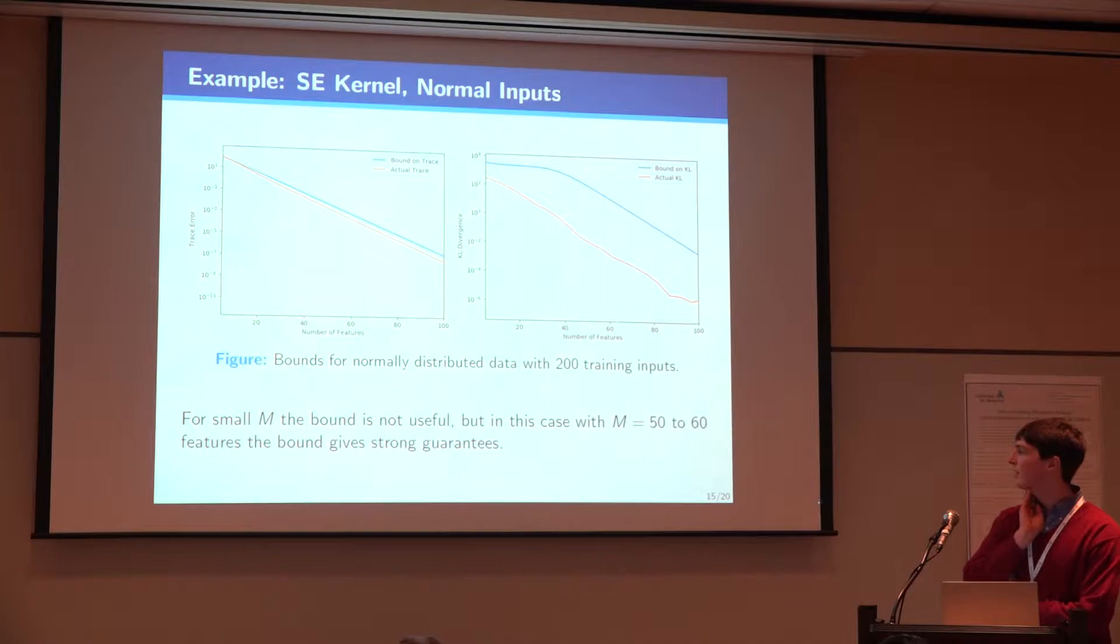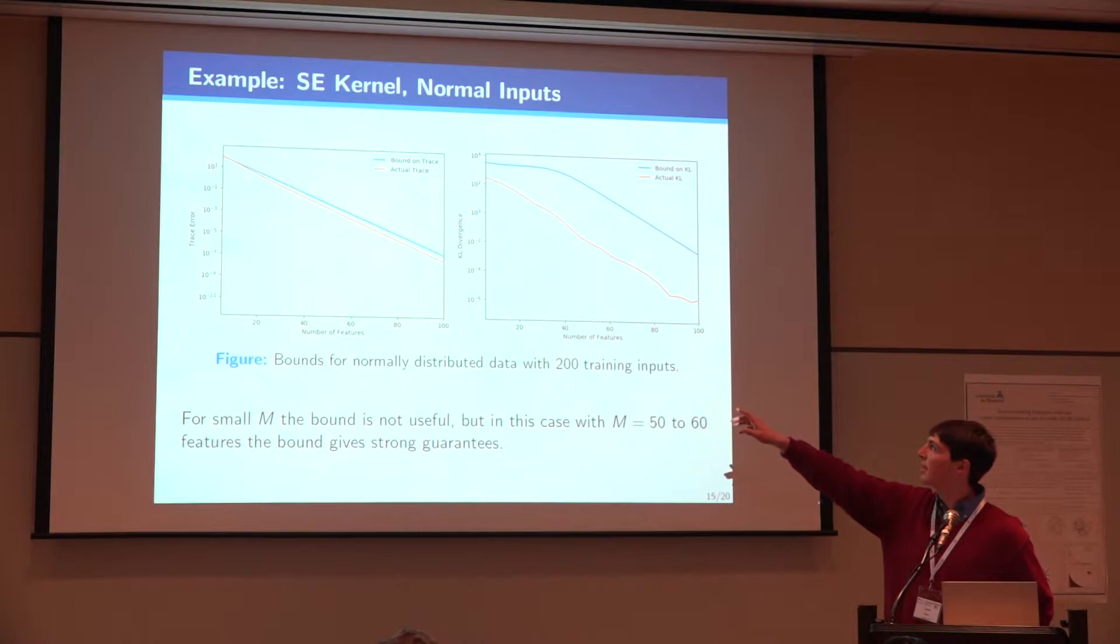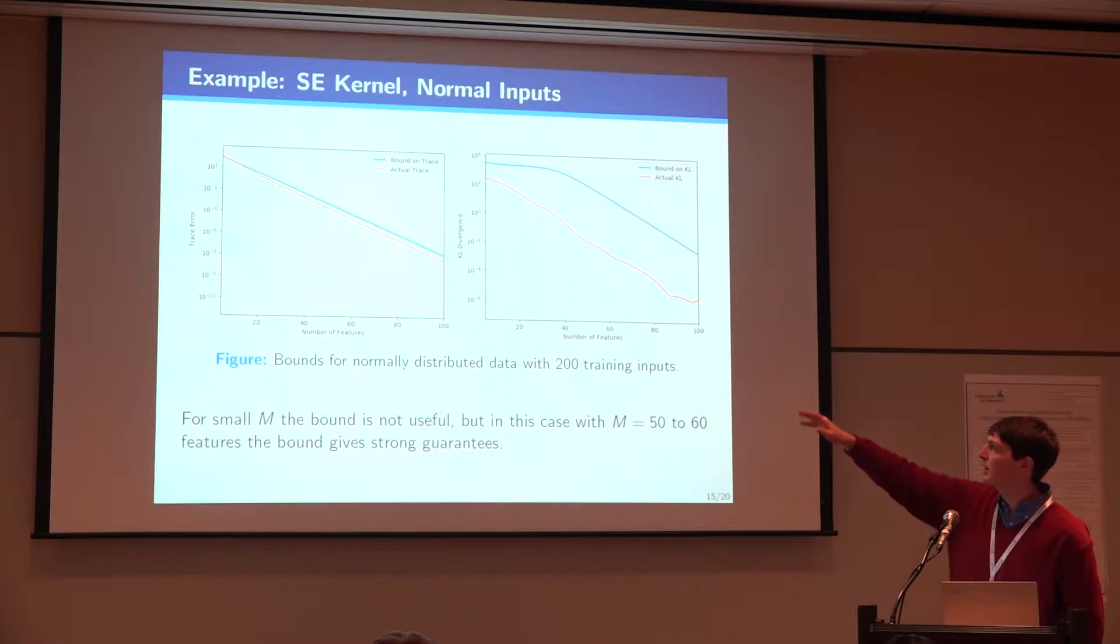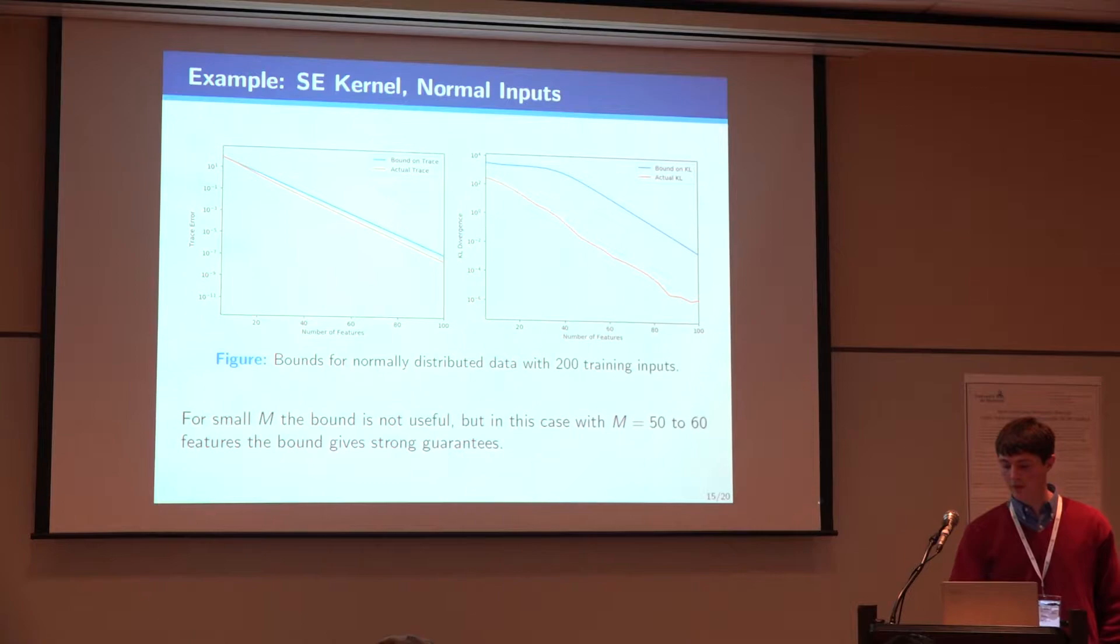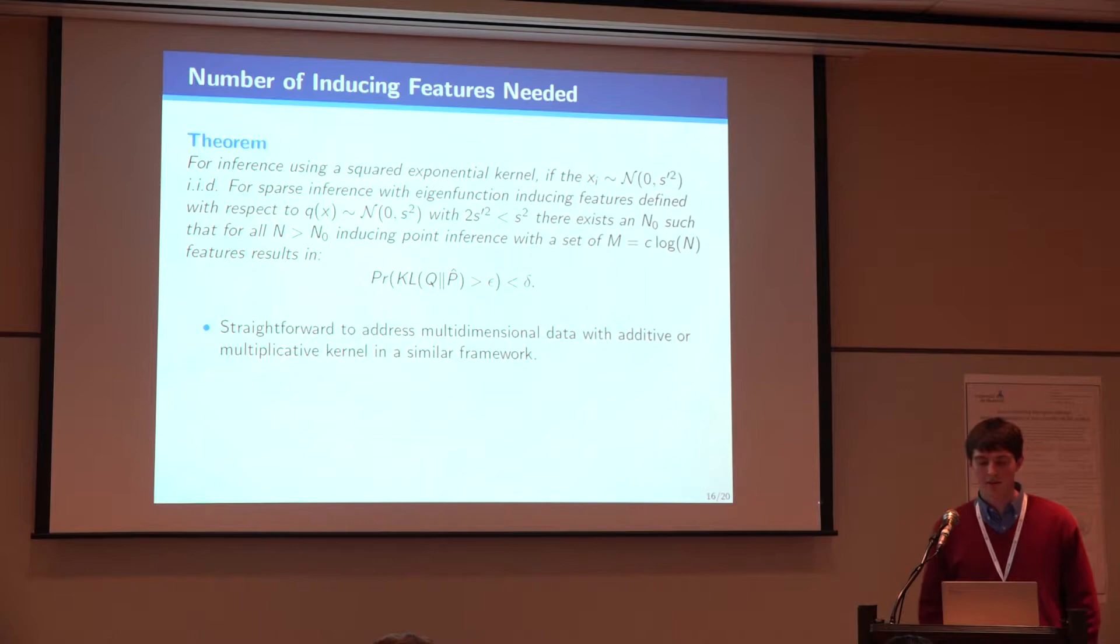If we look at the squared exponential kernel, as I noted earlier, the eigenvalues decay exponentially. So we get this exponentially decaying bound on the trace. Again, these are on a log-linear scale. And we can see that it's actually quite tight. So this bound actually is in expectation and not necessarily with high probability or something like that. And we similarly get a bound on the KL divergence, which decays rapidly at least as you go out. So it's not a very useful bound for maybe 40 features in this example. But once you get to 50 or 60, you can say that you have a really good approximation to your posterior.